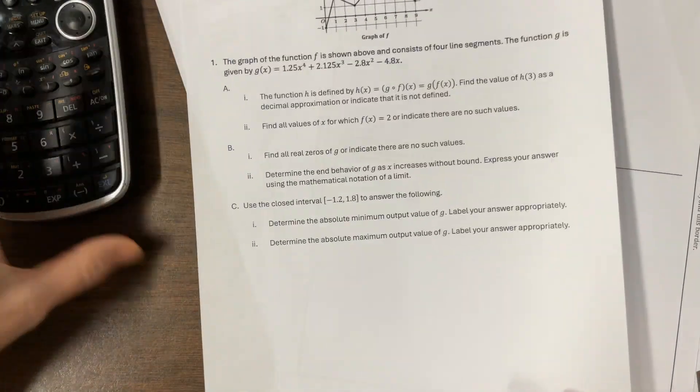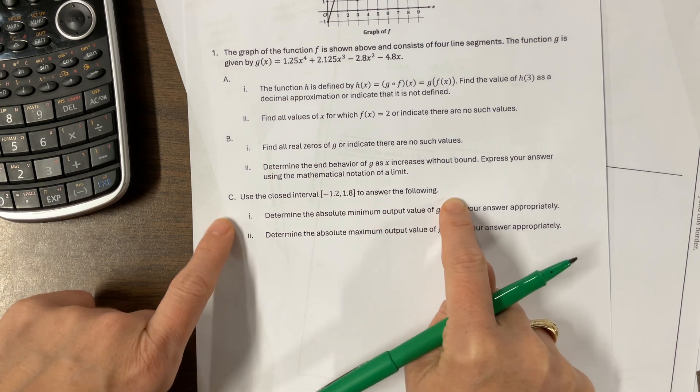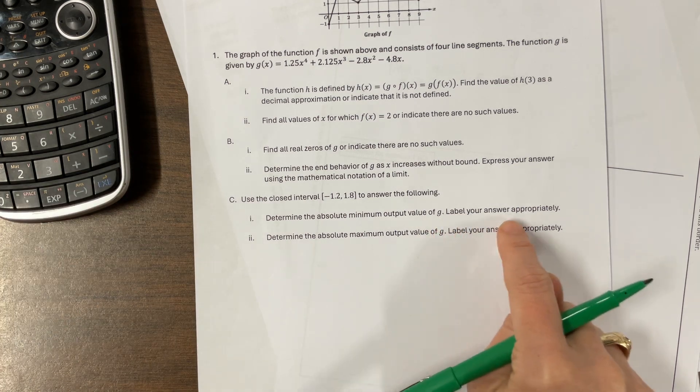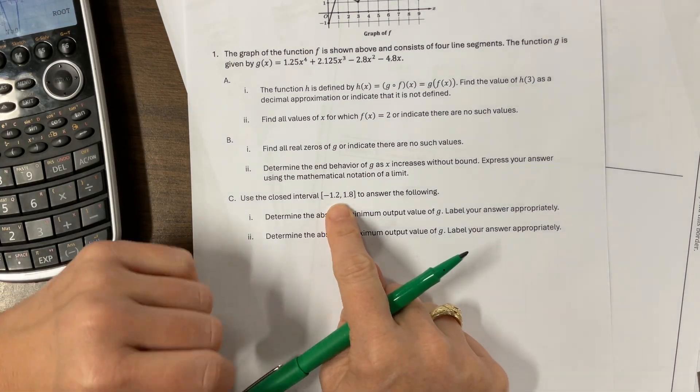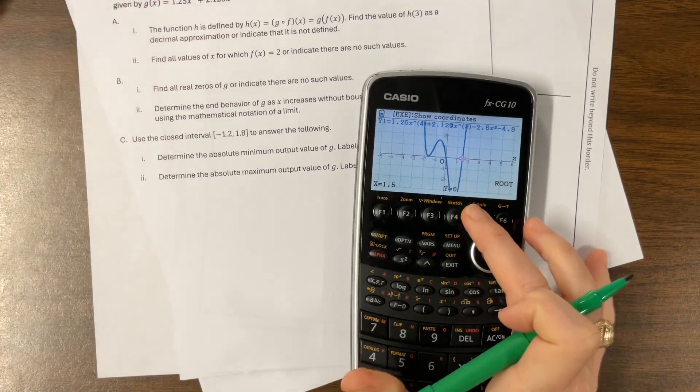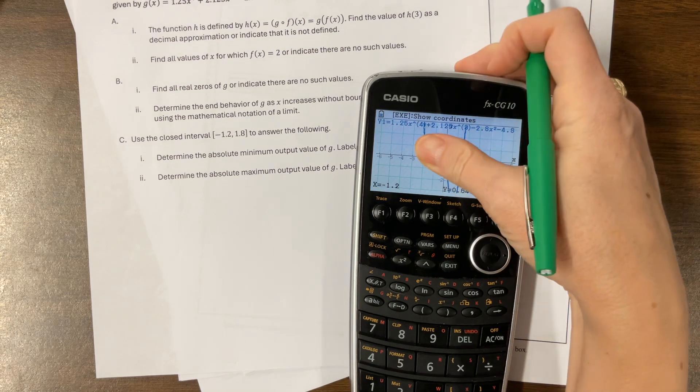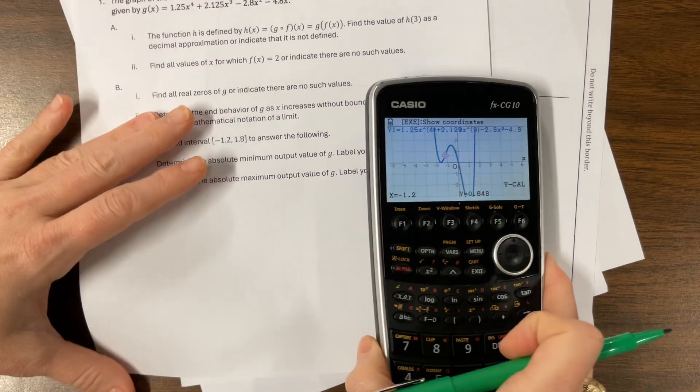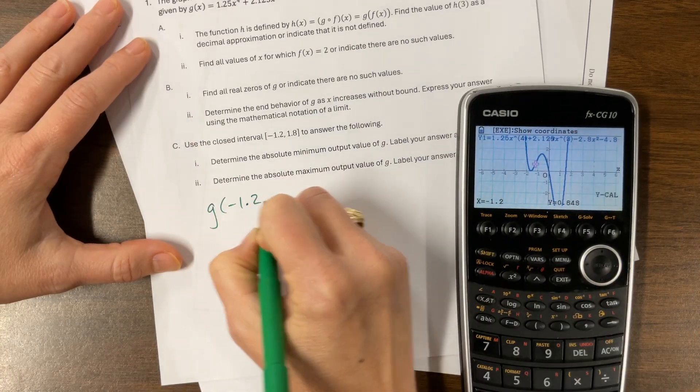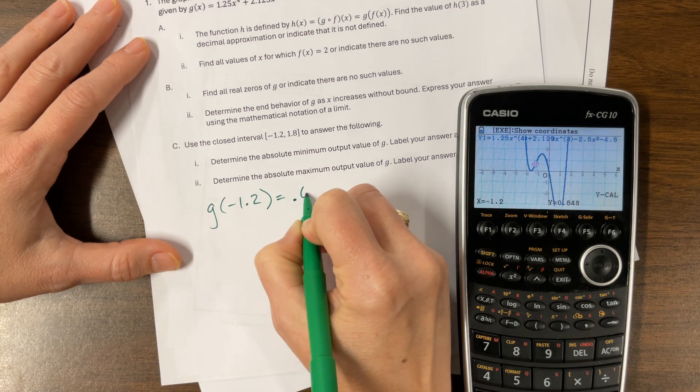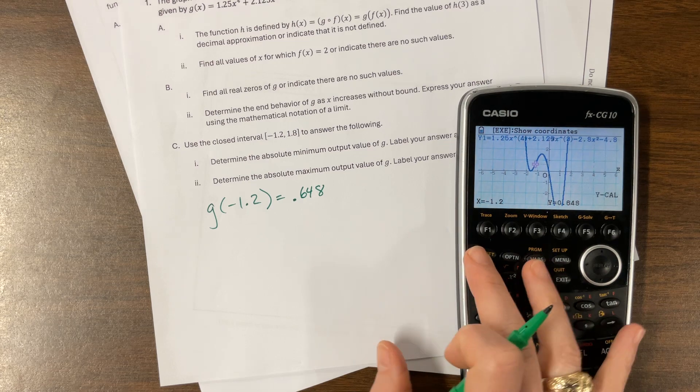Okay, so many papers, okay. Okay, find all, nope, I already did that. Use the closed interval, x equals negative 1.2 to 1.8 to answer the following. Determine the absolute minimum output value of g. Label your answer appropriately. Determine the absolute maximum output of g. Okay, but notice what they're doing here is they're keeping me in this particular window. So what I might do with my calculator is come here and do that g solve again and calculate what happens. Where is a negative 1.2? Okay, so that's somewhere here. So at negative 1.2, and I might write this down either on my scratch paper or response. Let's see, determine the app. You know what? I'm going to write this on the scratch paper. I'm going to say that g of negative 1.2 is equal to, I think that's 0.648. Hopefully I can read that correctly. Don't get old, your eyes get worse. Sorry.